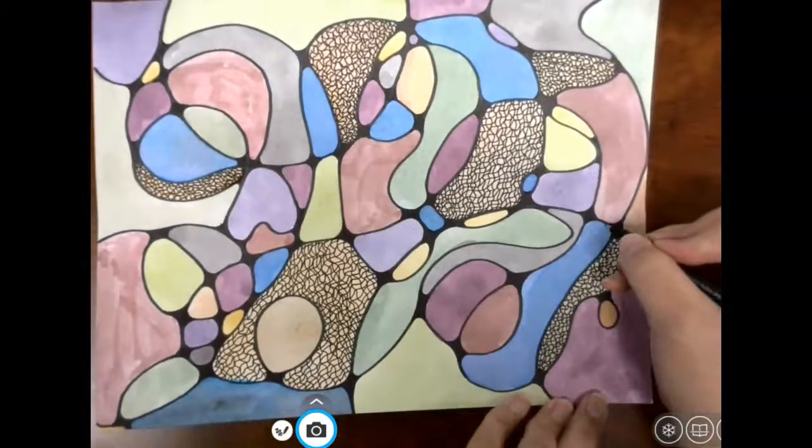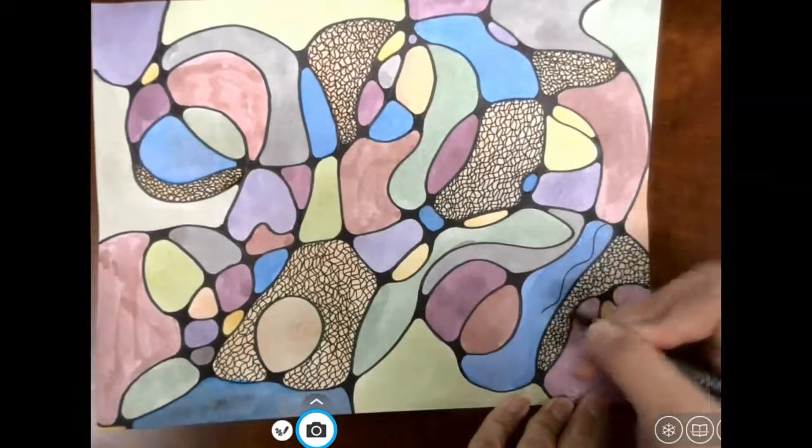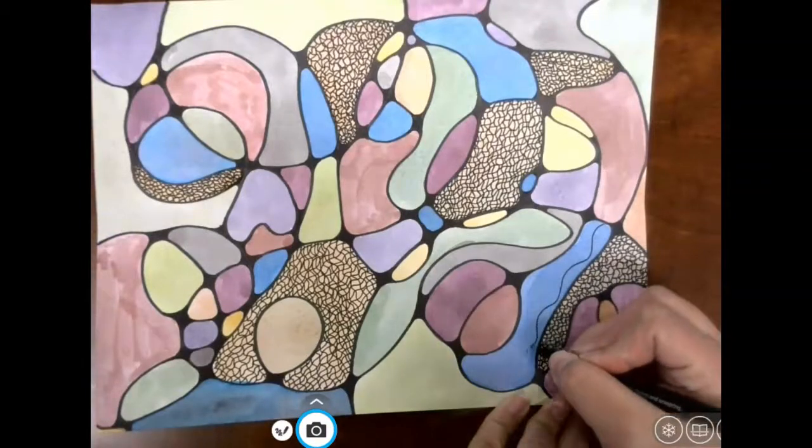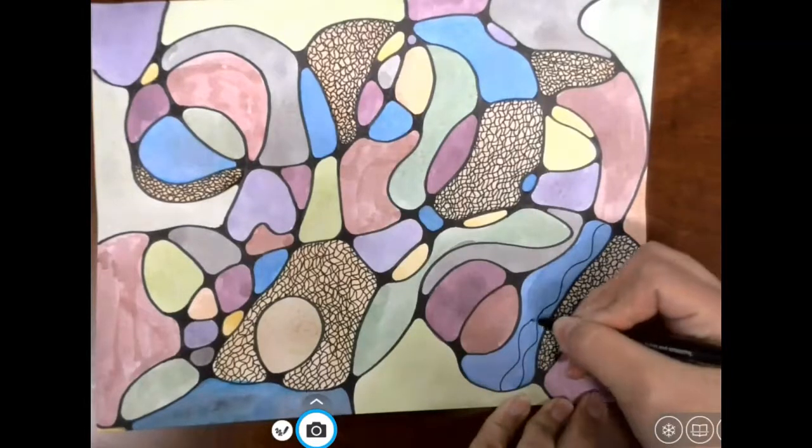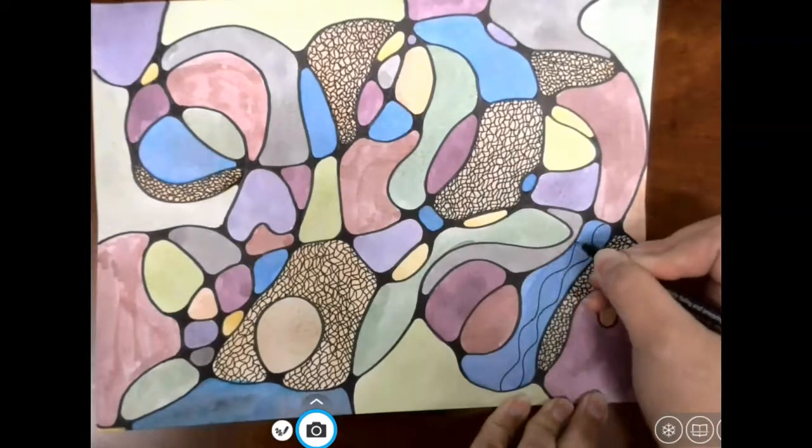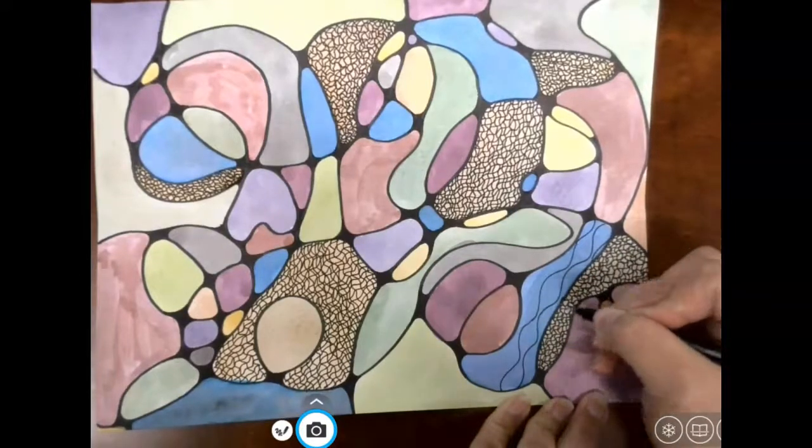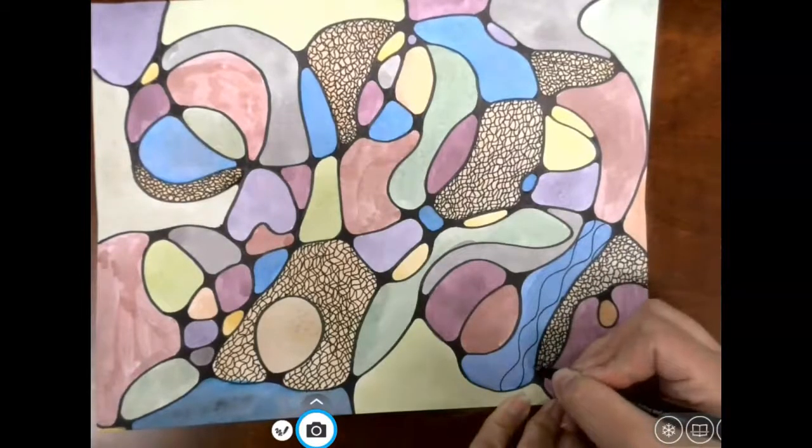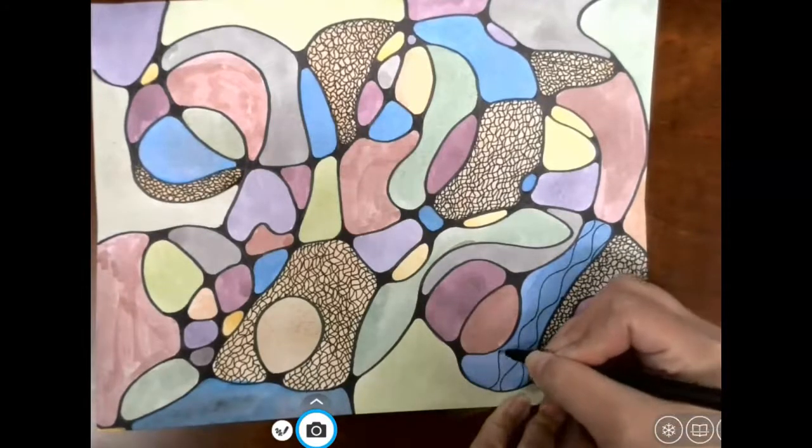So for this one here I'm going to start with some bigger lines going like this, and then an opposite, again opposite, so that I can kind of get this pattern going all the way across.